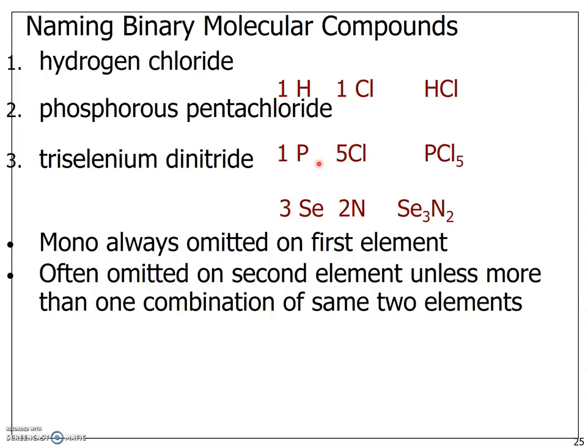However, you saw the example with carbon dioxide. Sometimes there's carbon monoxide, carbon dioxide. So in the cases of multiple combinations of elements, it is important to include the mono to indicate how many of the atoms you have.